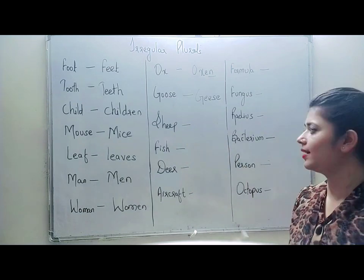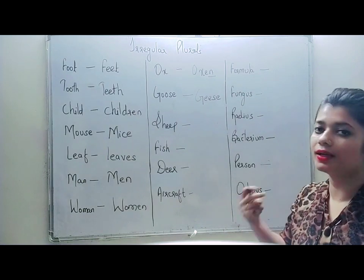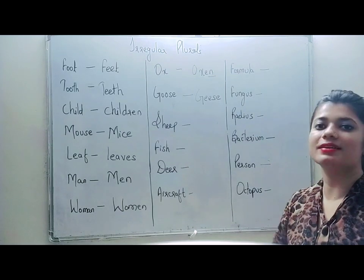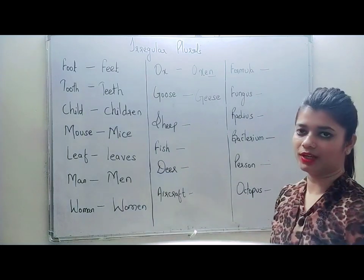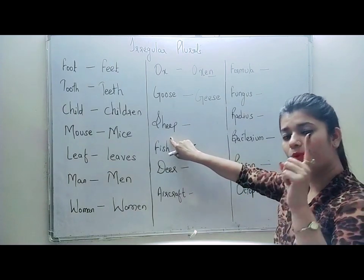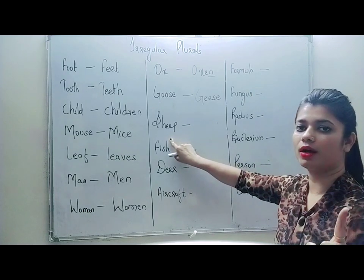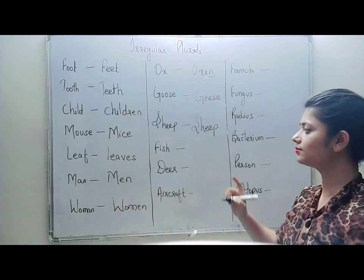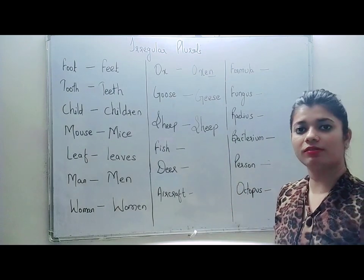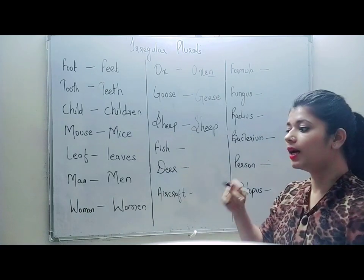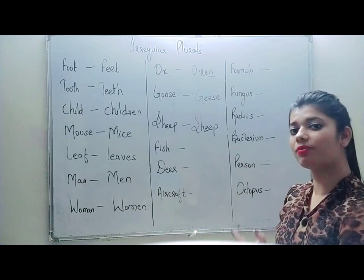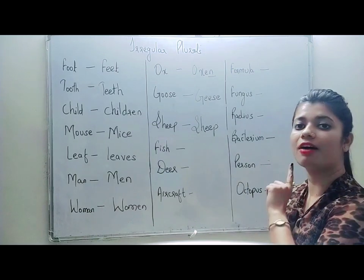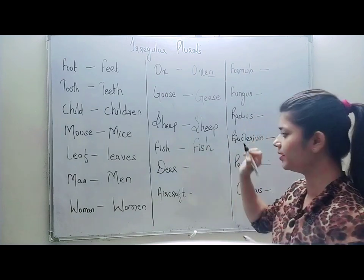From here onwards, even well-educated people are often heard making these mistakes. So you should avoid them. The word ship — which is an animal — its plural form will be ship itself. No change. It will not be ships. Similarly, fish: many people say fishes, which is wrong usage. Unless you are scientifically discussing species, the plural form of fish is fish itself, no change.